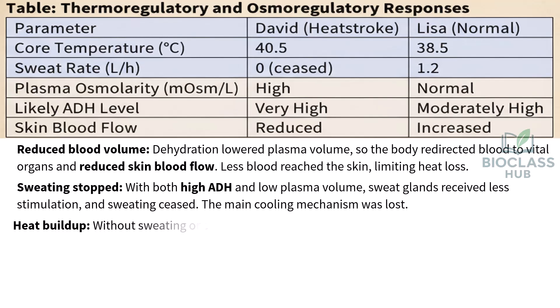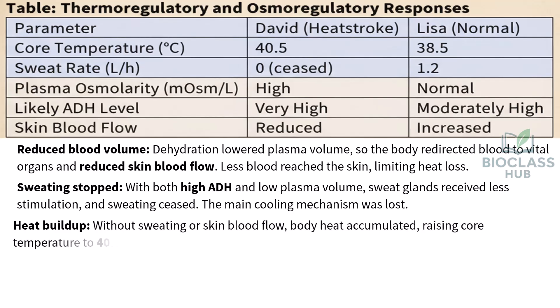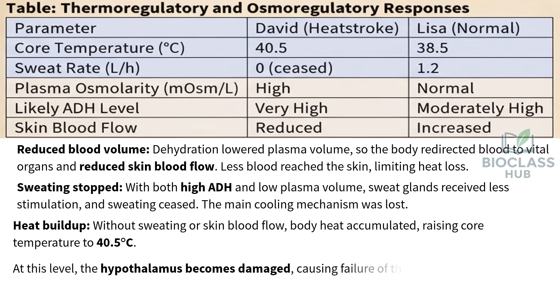With both high ADH and low plasma volume, sweat glands received less stimulation and sweating ceased — the main cooling mechanism was lost. Without sweating or skin blood flow, body heat accumulated, raising core temperature to 40.5 degrees Celsius. At this level, the hypothalamus becomes damaged, causing failure of thermoregulation and complete heat stroke.